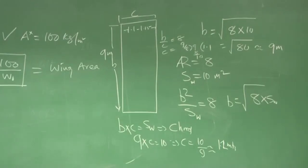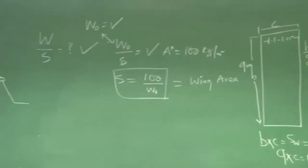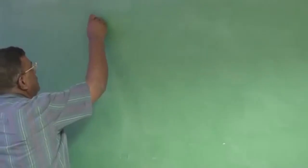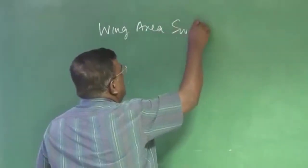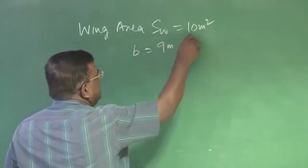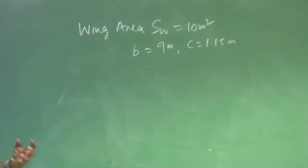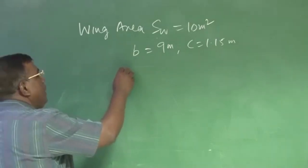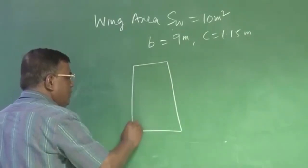After you get an idea about span and chord of the wing — say wing area is 10 meters squared, B is 9 meters, C is 1.15 meters — there are two important tasks. What are those? First: how should my wing look? That is, what will be the taper ratio of the wing if it is a low-speed wing?